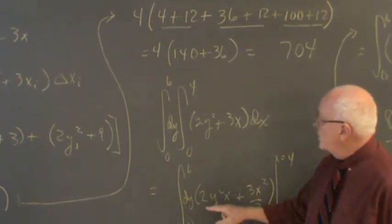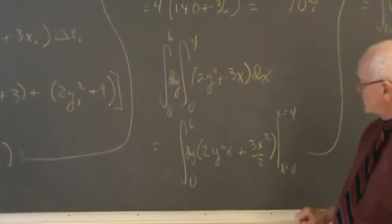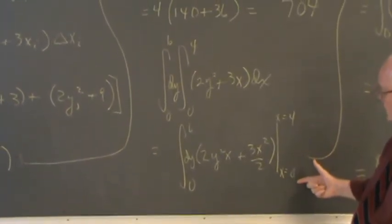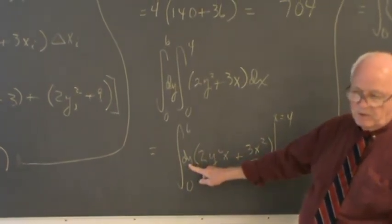So when I integrate 2y squared plus 3x with respect to x, I get 2y squared x plus 3x squared over 2 evaluated from x equals 0 to x equals 4, and then I'm going to integrate with respect to y.